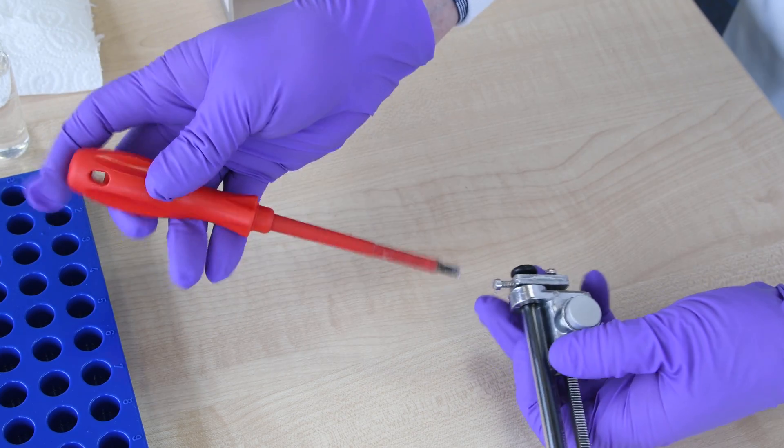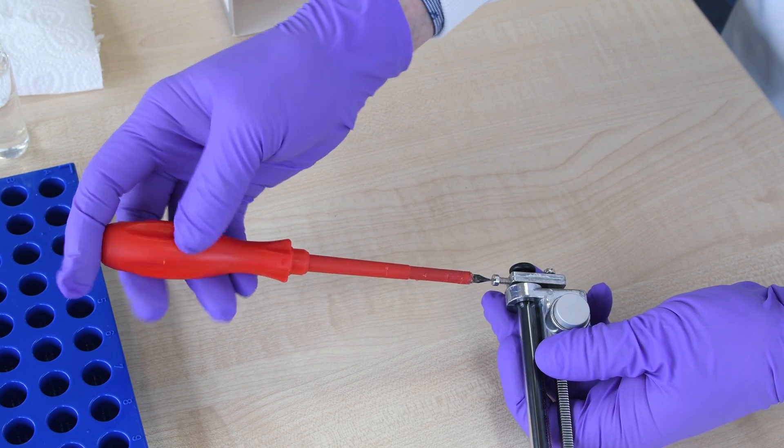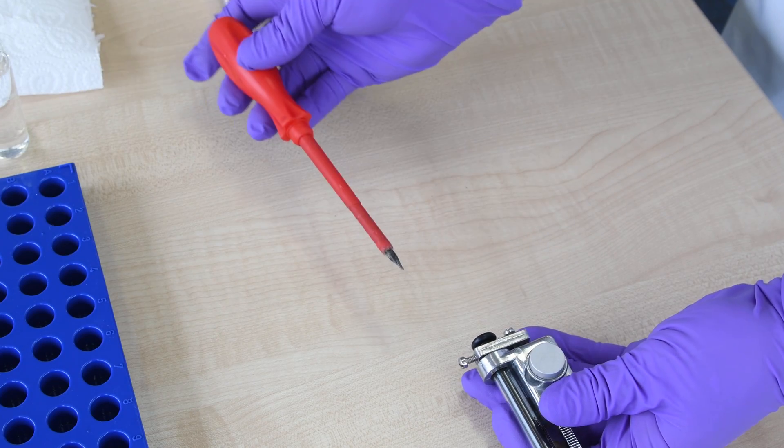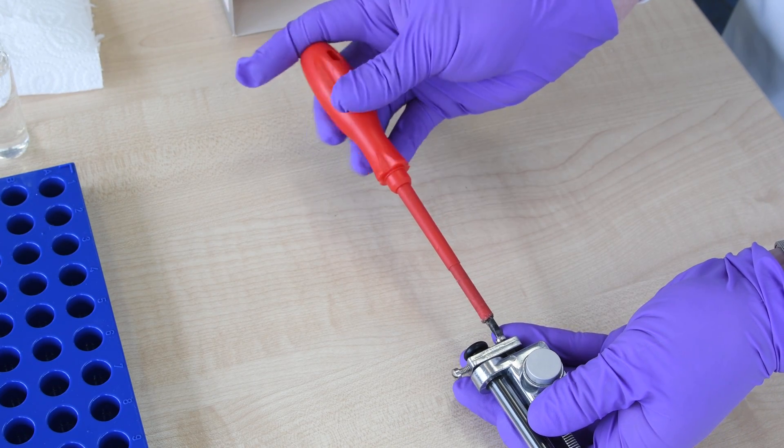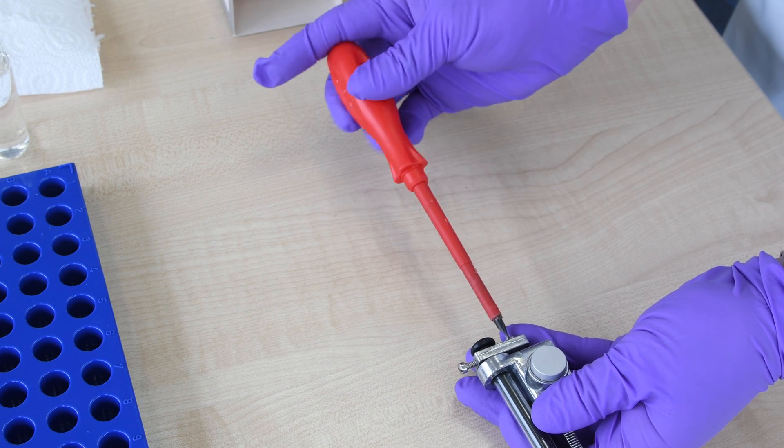First, we tighten the top screw. Once that's in place, we can then tighten the top screw. We can now secure the base screw, which will hold the syringe squarely in place.